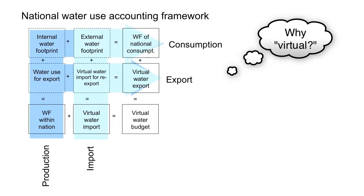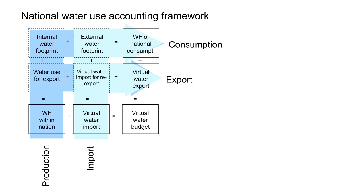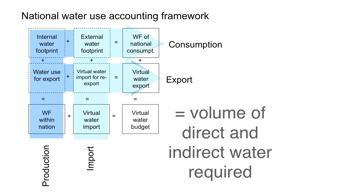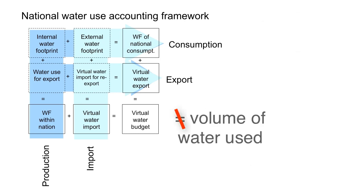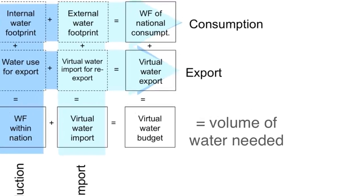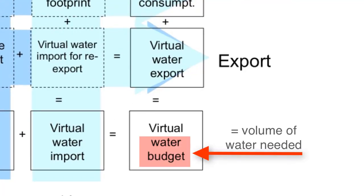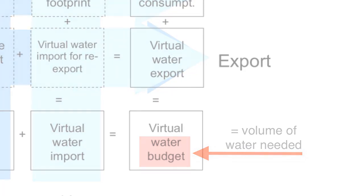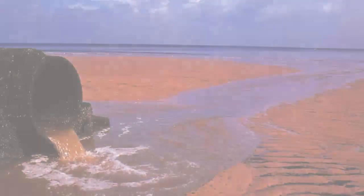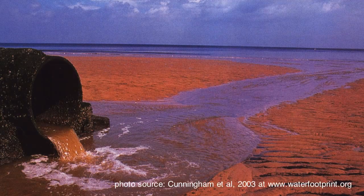You might wonder why it's called virtual water and not simply water. Note that these volumes of water are the volumes required, not actually the volumes used. For example, the water footprint tracks water needed to dilute pollutants, but it is not always the case that water is actually used to dilute pollutants to acceptable levels.